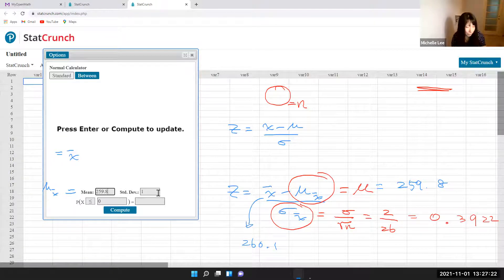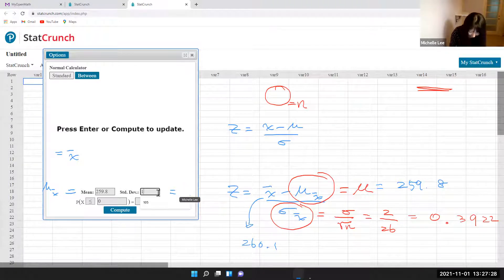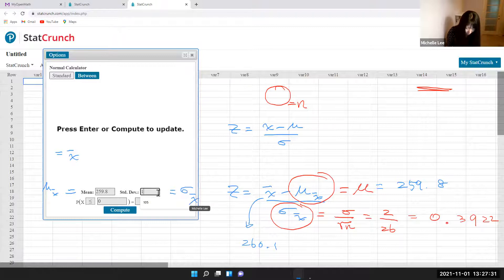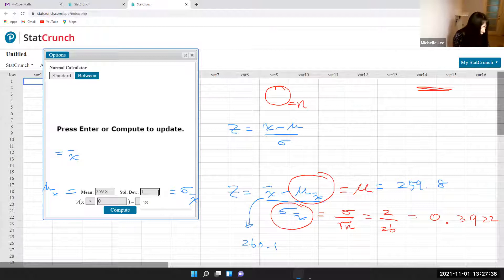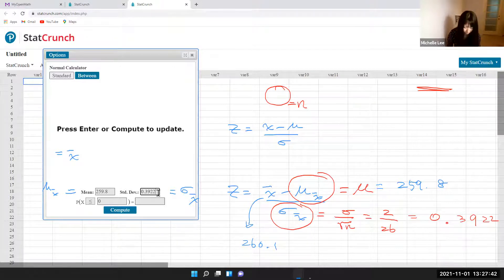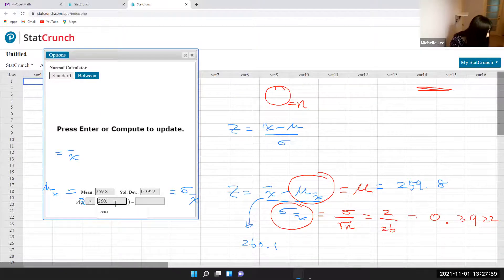Now sigma sub x bar, this will be sigma sub x bar, which is sigma over square root of n, which is 0.3922. And this will be x bar. This will be x bar, so this will be 260.1, that's about the question. So 260.1. Now we're done.